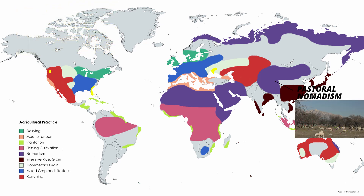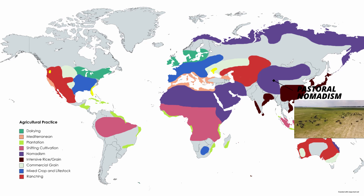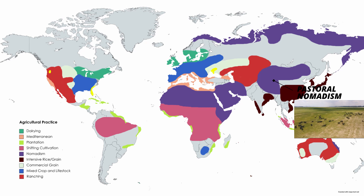We also have pastoral nomadism, where people live a nomadic lifestyle. They're most prevalent in uninhabitable areas like the Sahara or Siberia, and for the most part they're doing some sort of herding or traveling with goats, buffalo, and sheep.